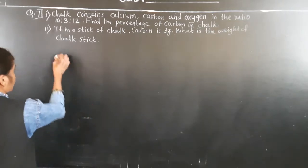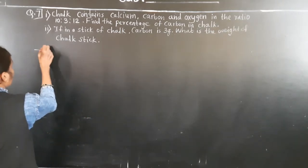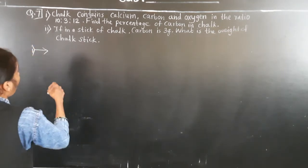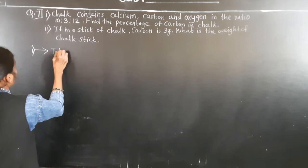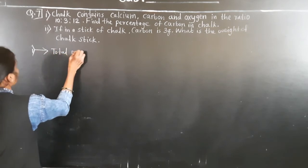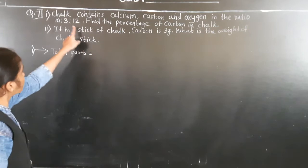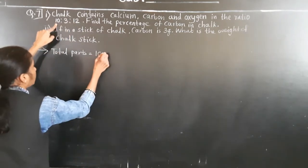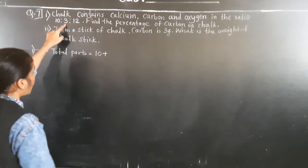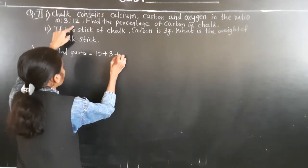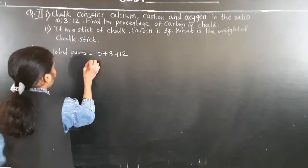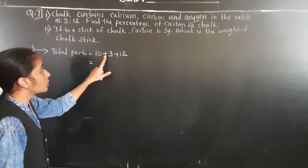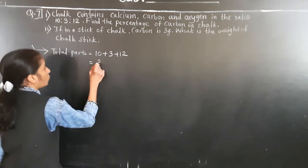Let's find the total parts first. The ratio is 10 is to 3 is to 12. First part is 10, second part is 3, and third is 12. Find the sum: 12 plus 3 is 15, and 15 plus 10 is 25. So total number of parts is 25.